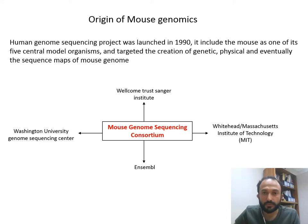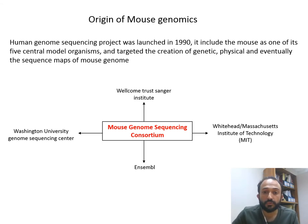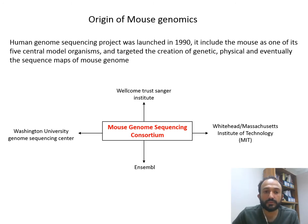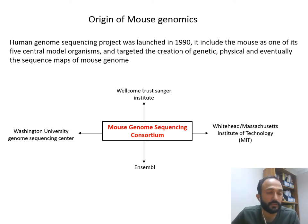This is a small summary of the Human Genome Project. We will talk briefly about the origin of mouse genomics. When we sequenced the whole human genome, we then needed to sequence the model organism most frequently used in experimental approaches, which is the mouse.